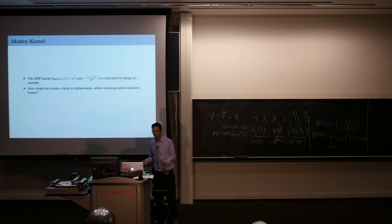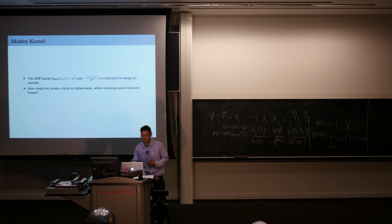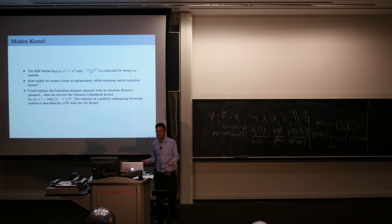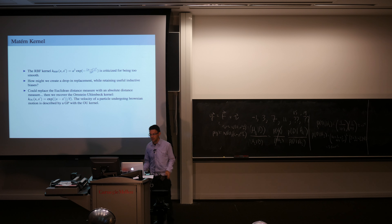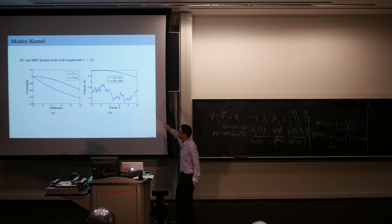Although the RBF kernel is very popular, it's often criticized for being overly smooth — functions drawn from a GP with an RBF kernel are infinitely differentiable. Replacing the squared distance measure with an absolute value distance gives the Ornstein-Uhlenbeck kernel — a GP with an OU kernel corresponds to the velocity of a particle undergoing Brownian motion, providing a less smooth alternative that retains the useful bias that nearby inputs are more correlated than far-away ones.